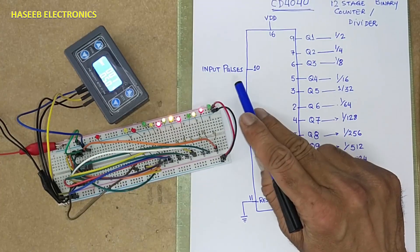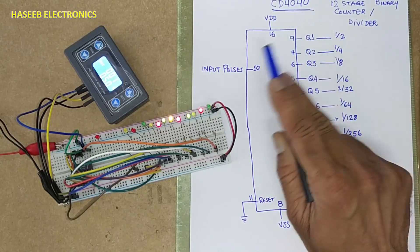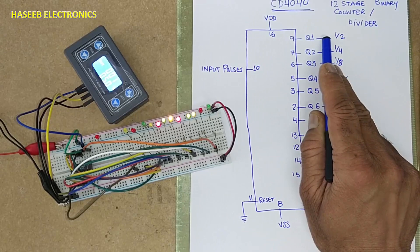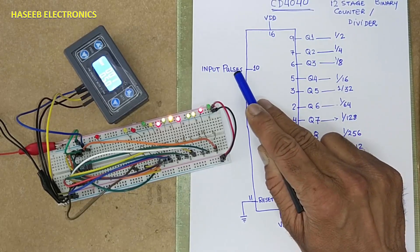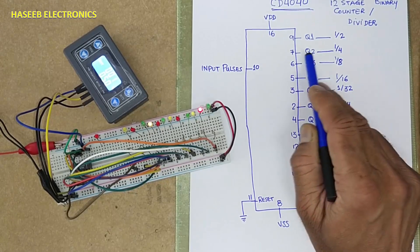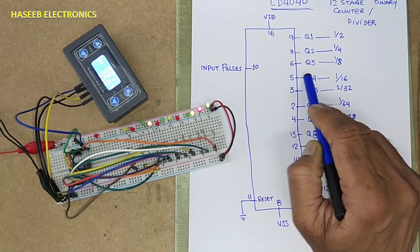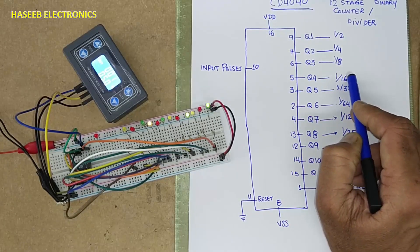We can say, if we provide 16 hertz here, here we will receive 16 by 2, 8 hertz. 16 hertz divided by 4, 4 hertz. 16 hertz divided by 8, 2 hertz at this pin. 16 hertz, 16 divided by 16. At this point, we will receive 1 hertz.